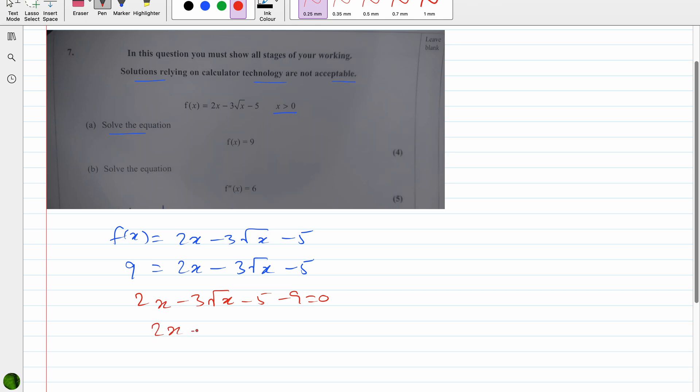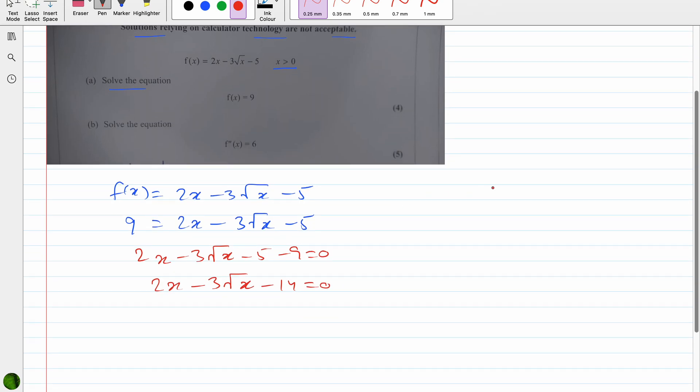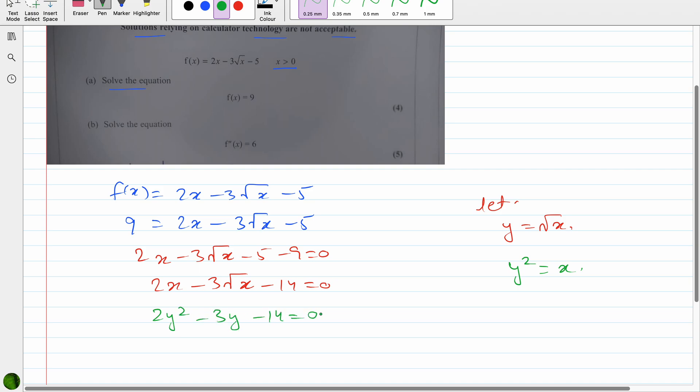So this is 2x - 3√x - 14 = 0. Now if I say let y = √x, so if I take square on both sides, y² = x. Now I'm writing 2y² - 3y - 14 = 0. Ultimate goal is to solve for x.